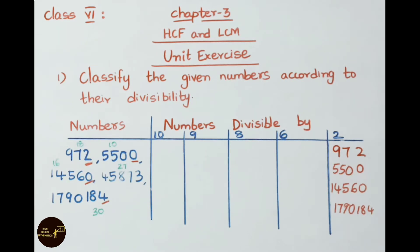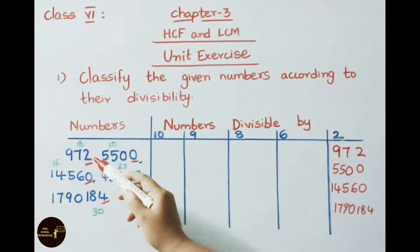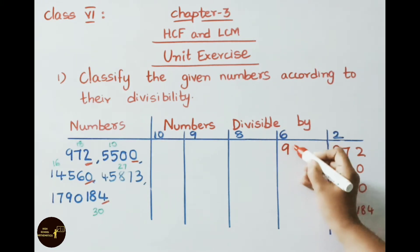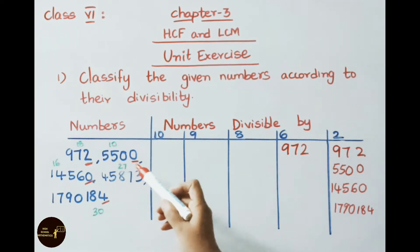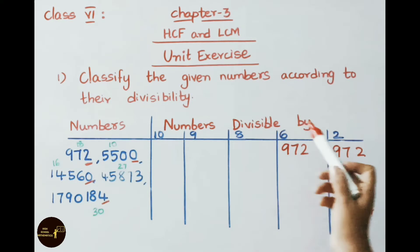Now let us check divisibility by 6. A number divisible by 6 must be divisible by both 2 and 3. 972 is already divisible by 2. For divisibility by 3, the sum of digits must be divisible by 3. For 972: 9 + 7 + 2 = 18, which is divisible by 3. So 972 is divisible by both 2 and 3, hence divisible by 6. For 5500: 5 + 5 = 10, which is not divisible by 3, so 5500 is not divisible by 6.